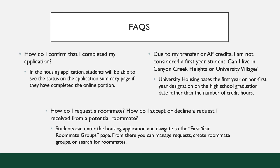Now we are going to go through some frequently asked questions. How do I confirm that I completed my application? In the housing application, students will be able to see the status on the application summary page if they have completed the online portion. If you cannot see the application summary page or you have further questions, please email housing@utdallas.edu from your UT Dallas email.